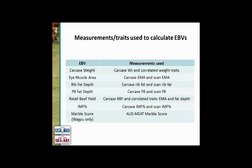Looking at which carcass traits have EBVs and what data is used to calculate them: carcass weight EBV uses actual carcass weight if available, but in most cases it's calculated from correlated weight traits of 600 and 400 day weight. Eye muscle area EBV uses carcass EMA if available, but in the majority of cases ultrasound scan EMA is used. The same applies to rib fat depth — carcass rib fat is used if available, otherwise scan rib fat.